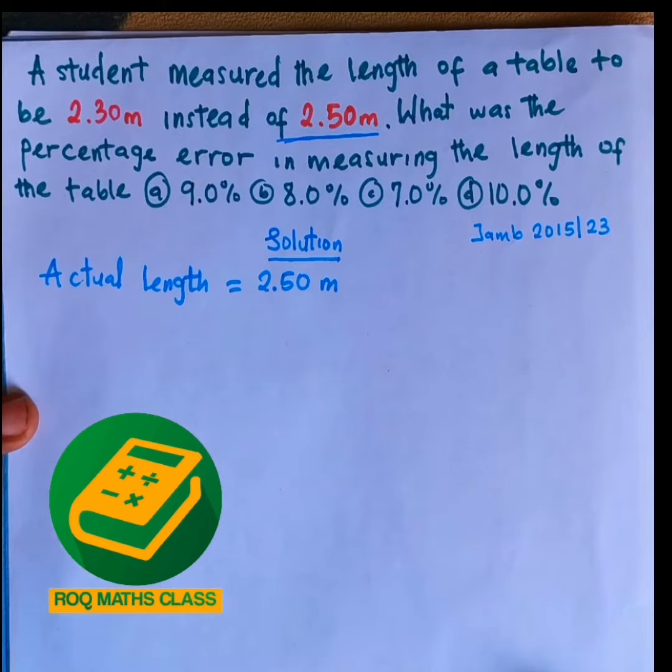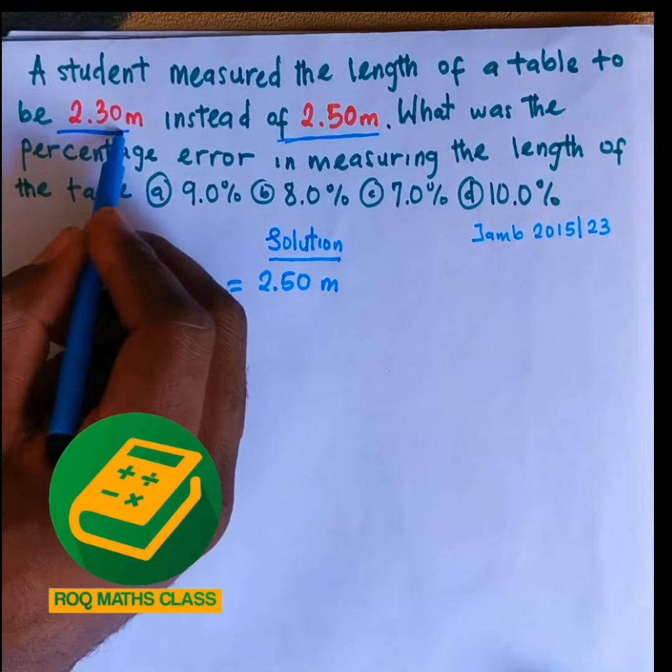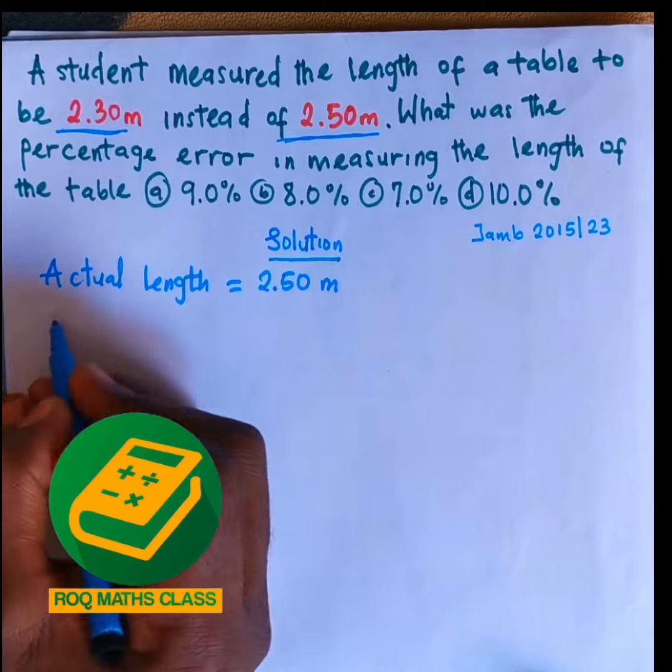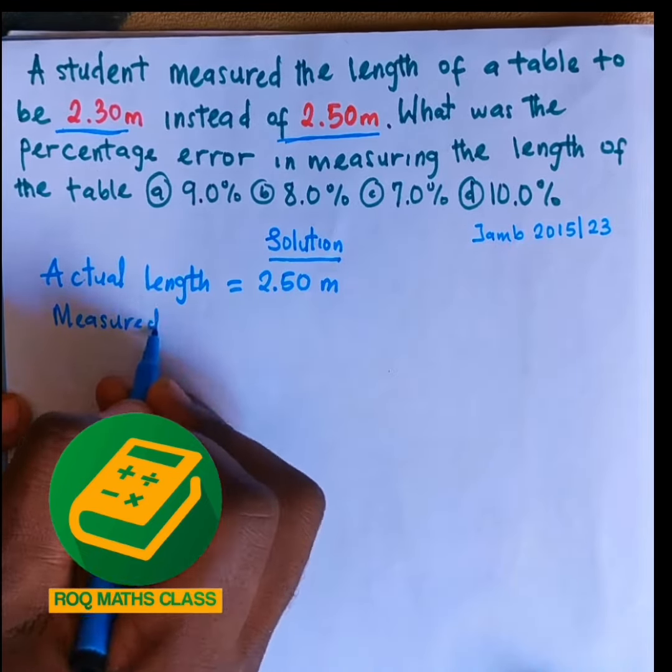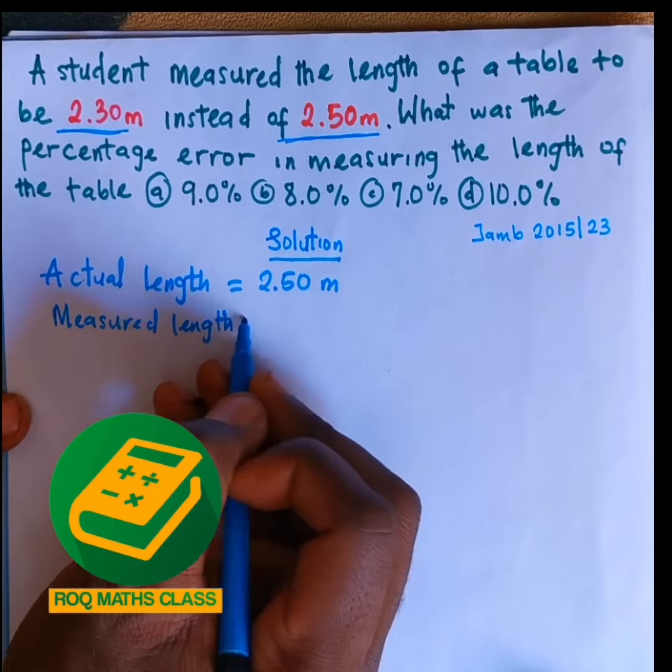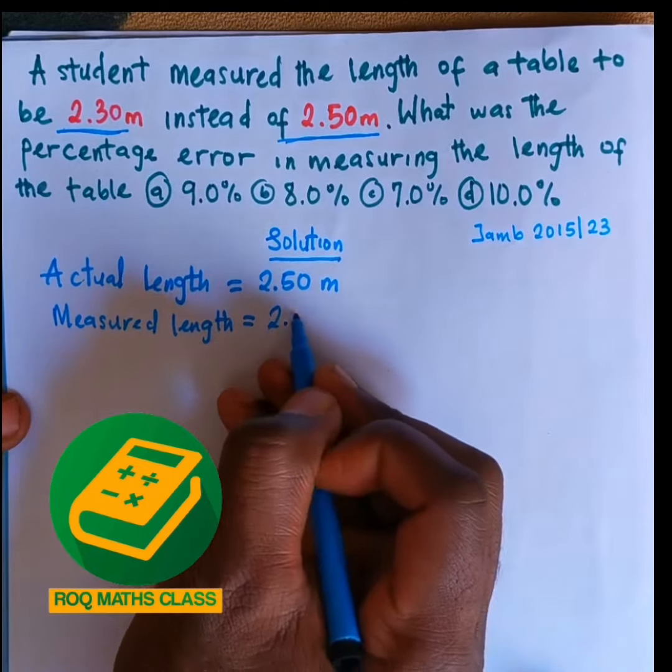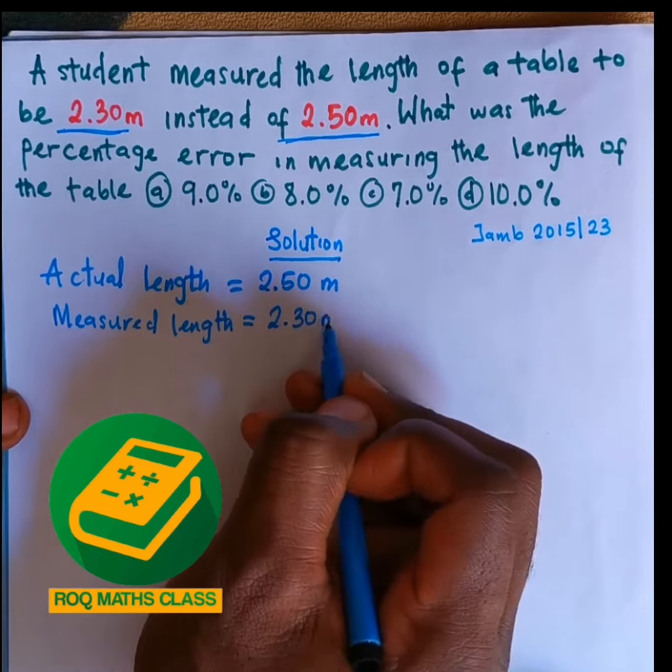The measured length is 2.30 meters. So our measured length is equal to 2.30 meters.